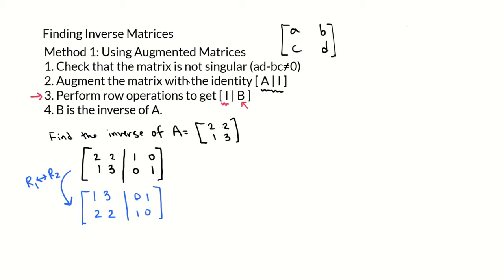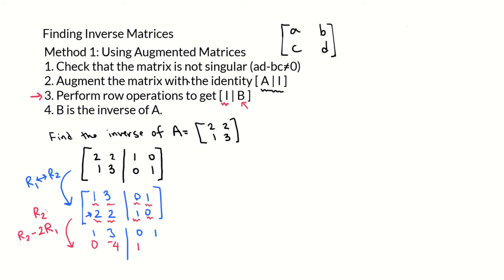Now let's try to get a 0 in the second position of the top row. The way we can do that is by multiplying row 1 by 2 and subtracting that from row 2 — replacing row 2 with row 2 minus 2 times row 1. We leave row 1 exactly as it is: 1, 3, 0, 1. Then row 2 minus 2 row 1 gives us 0, then 2 minus 6 which is negative 4, then 1 minus 0 which is 1, then 0 minus 2 which is negative 2.